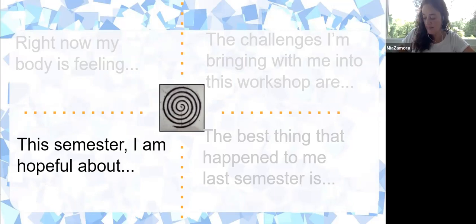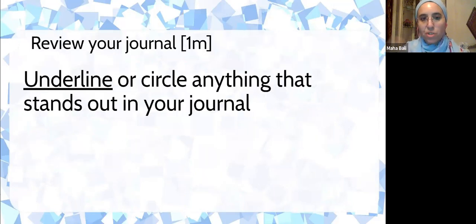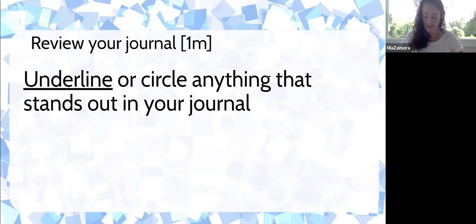Okay, so now we filled up the four quadrants. What we're going to do next is we would give everyone a minute to look at their journal again and underline or circle one thing that stands out in the journal, and that could be a phrase or just a word or something that stands out for you. So I'll give you less than a minute to do that, just look up when you're ready, just one thing.